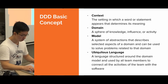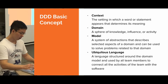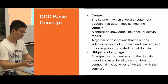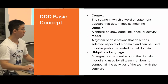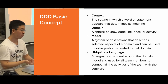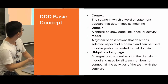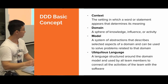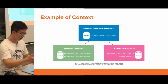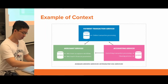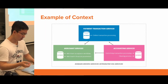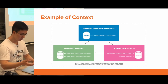Next is ubiquitous language: a language structured around the domain model and used by all team members to connect all the activities of the team with the software. I think everyone knows UML. For an internal development team, you can use Protobuf - it's also a language. We use JSON as well, XML as well, as long as everyone in the team understands the language. Here's an example of context: we have a payment system with merchant service and accounting service. In each context, we could find an object with the same name but they actually mean different things.